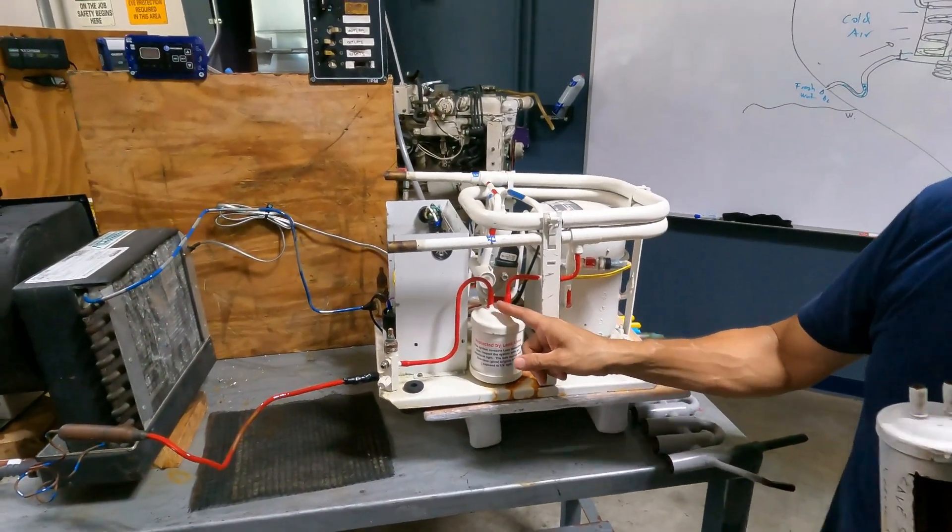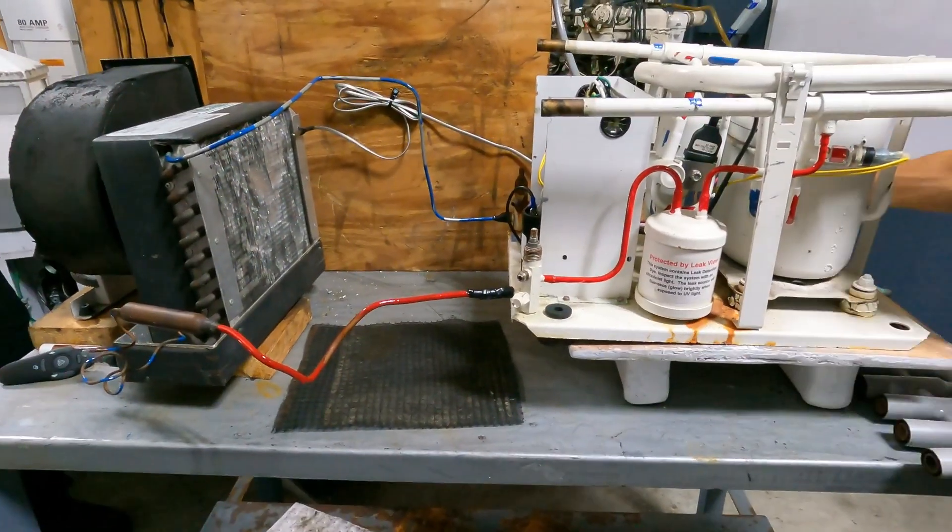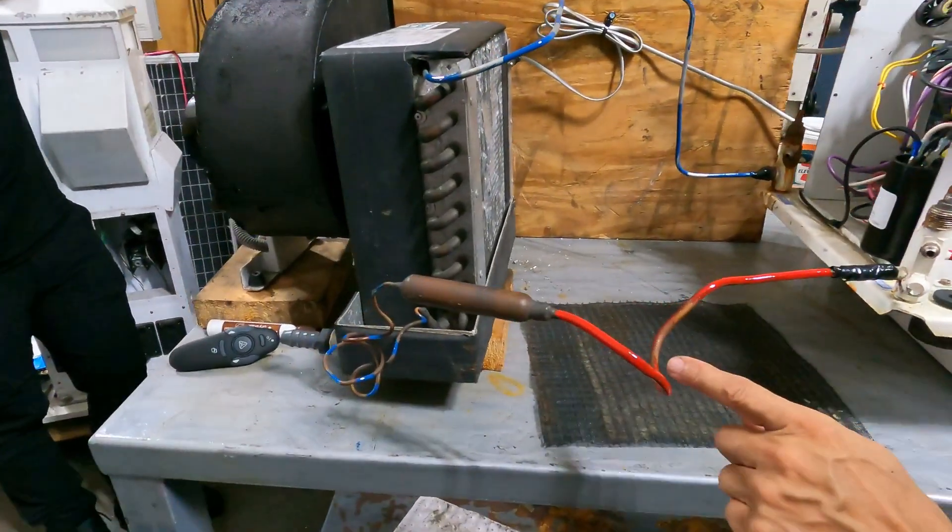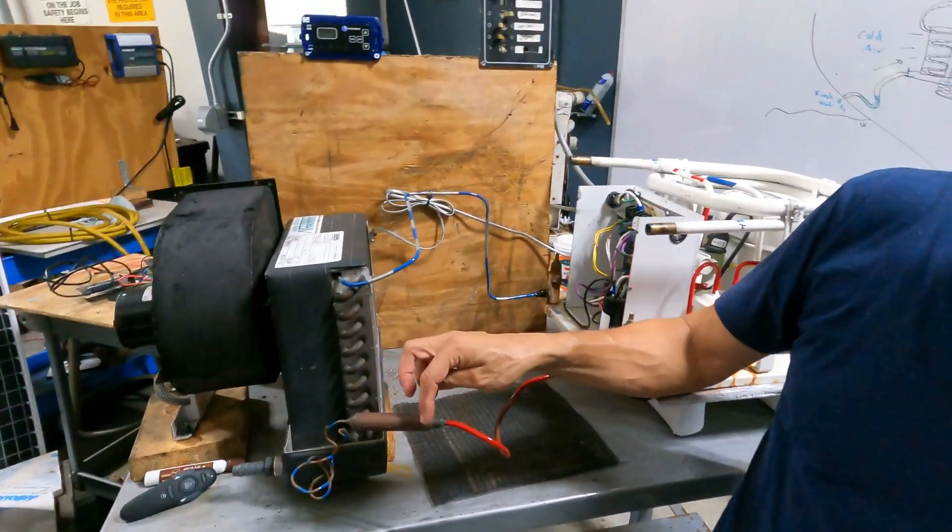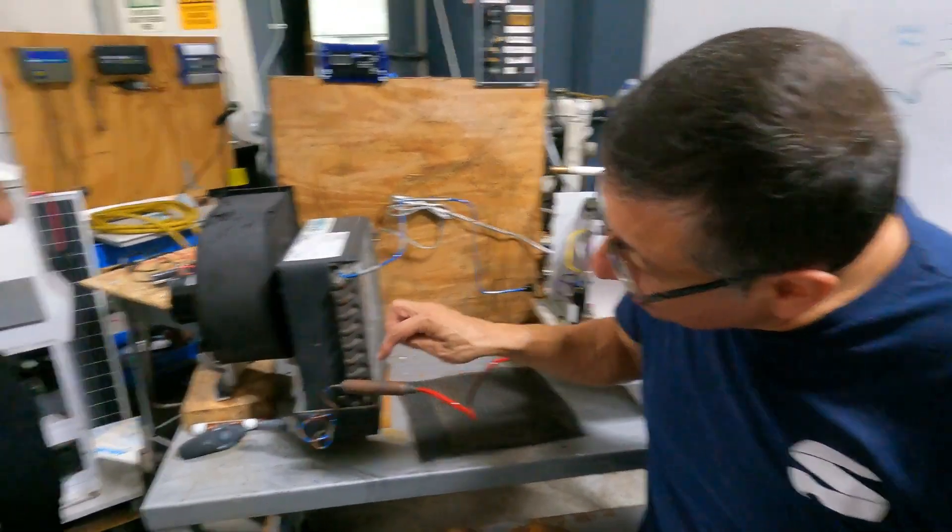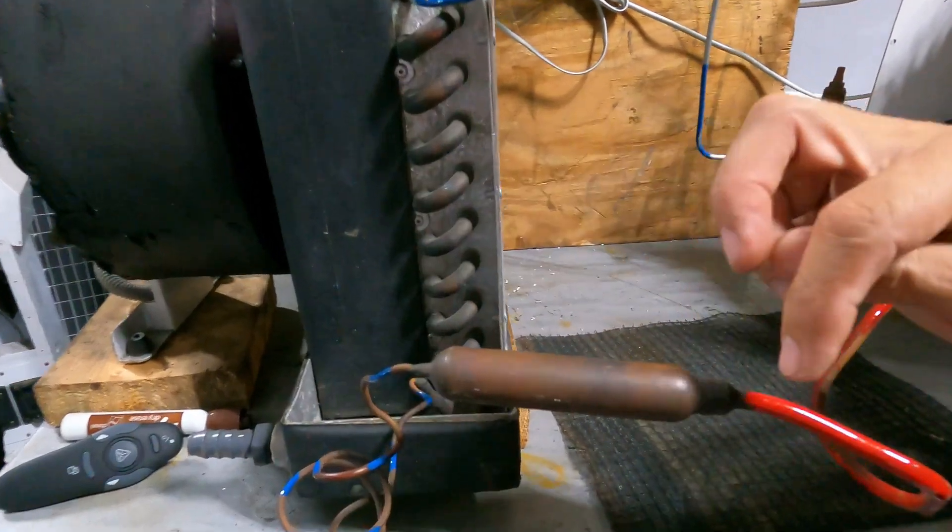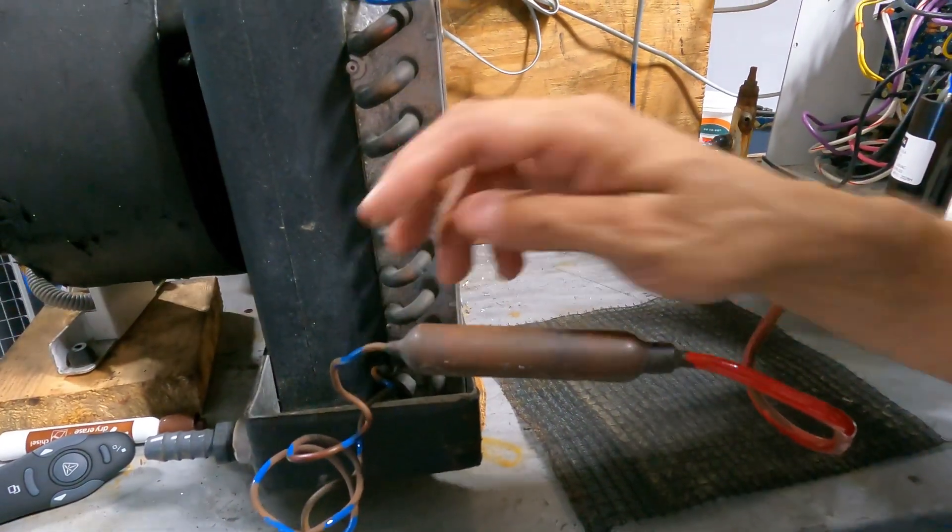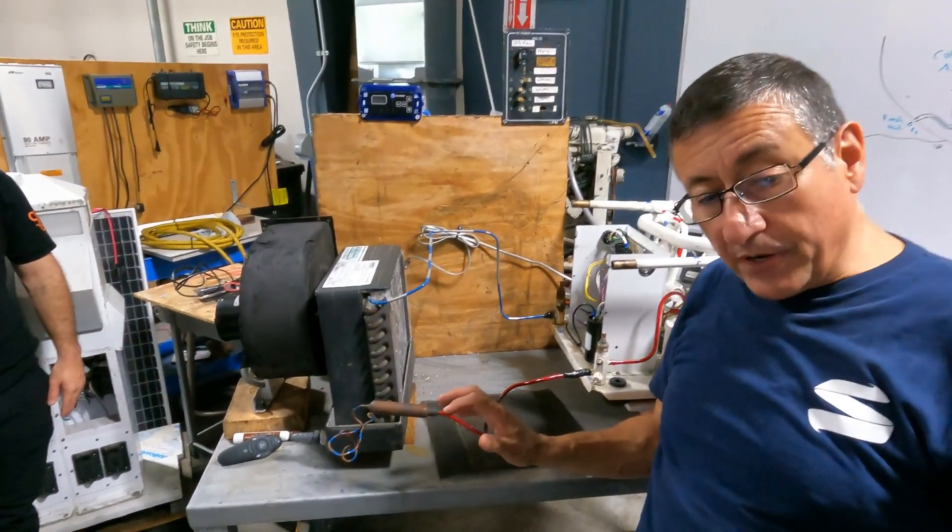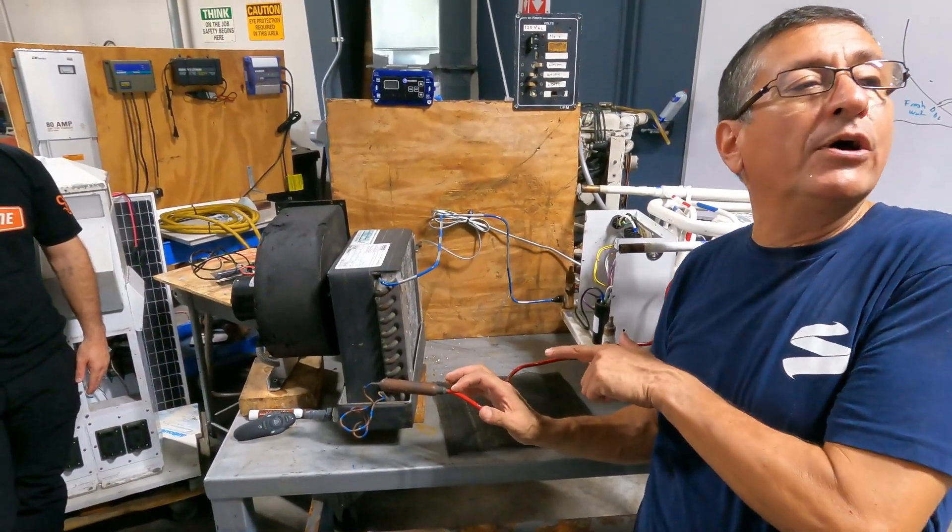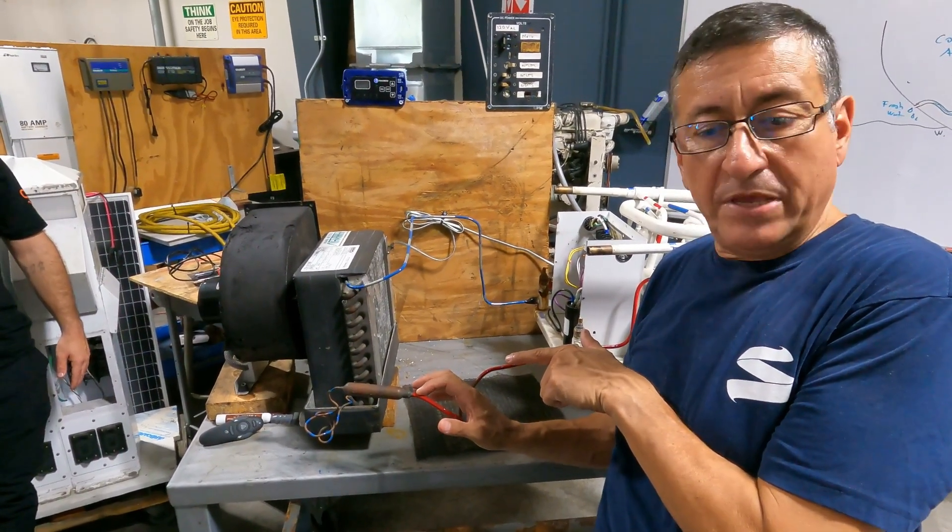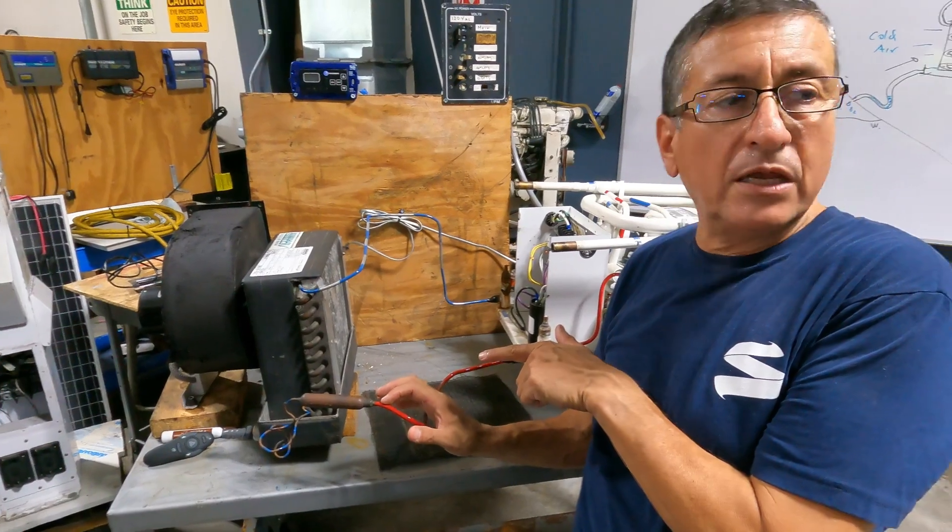And the refrigerant at high pressure and high temperature continues through the system. Here is another dryer, another filter, but the diameter of the pipe is reduced dramatically between this point and this point. What happened with the refrigerant? The refrigerant continues with high pressure and high temperature, but right now it's liquid at around 220 psi and around 110 degrees Fahrenheit.